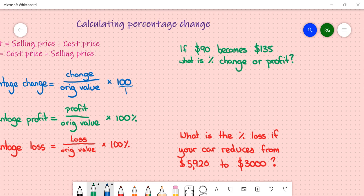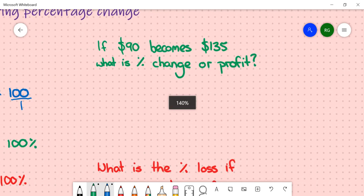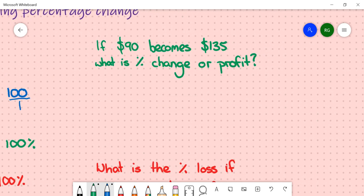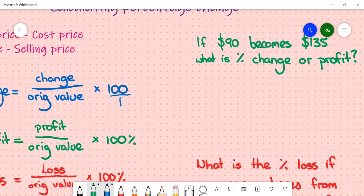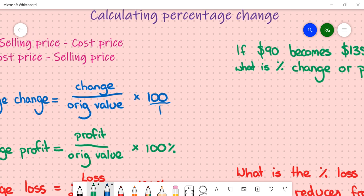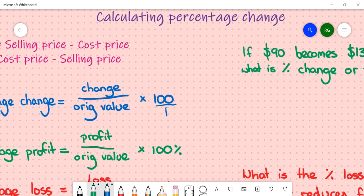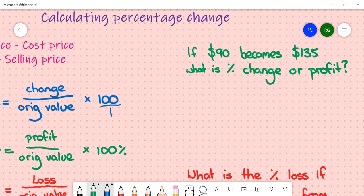If we have a look at the example over in the green, if $90 becomes $135, what is the percentage change or the profit? According to our formula before, the percentage change is the change, which is $135 minus $90, which equals $45.